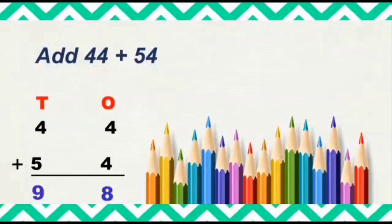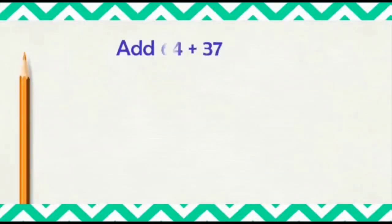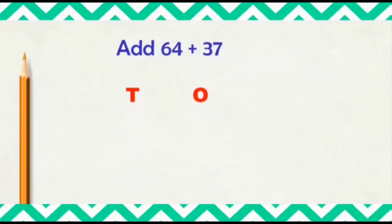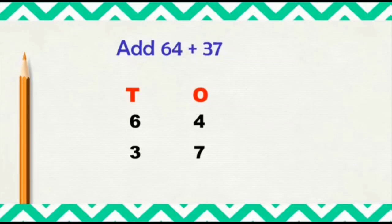Look at another example here. Add 64 plus 37. Same way, we will arrange these numbers according to their place values, so let's set up 10s and 1s. 64 means 6 tens and 4 ones. 37 means 3 tens and 7 ones. Write the plus sign.